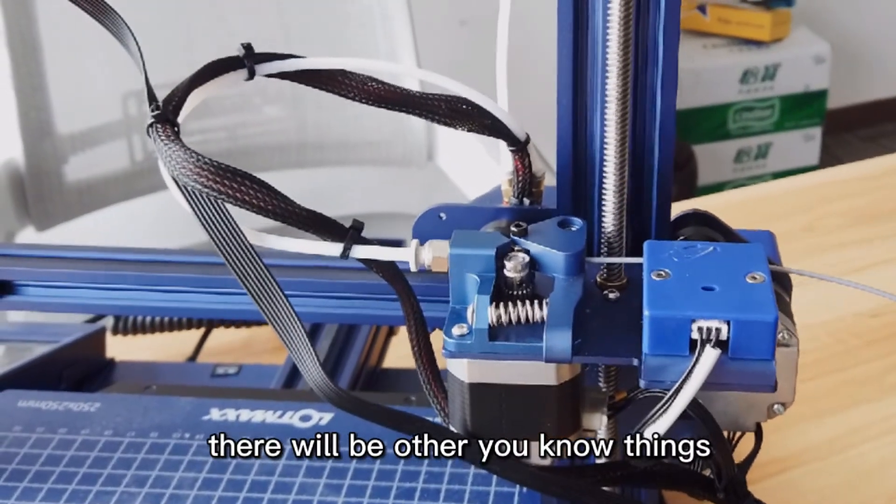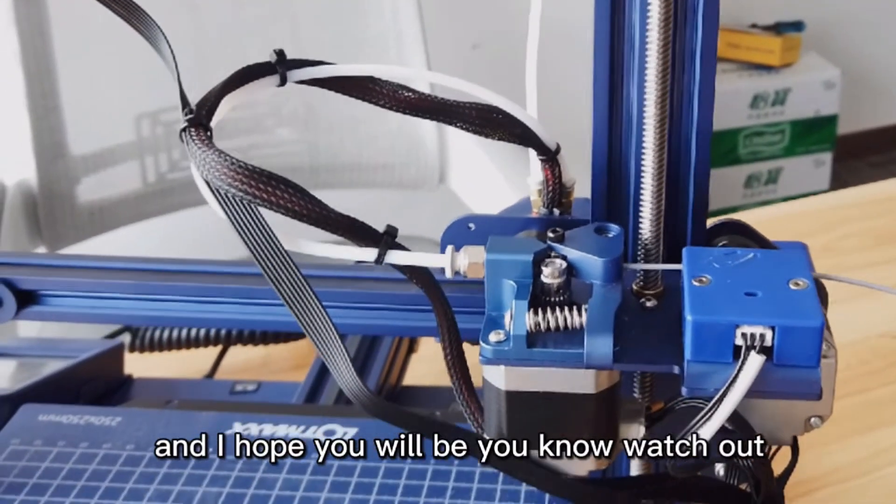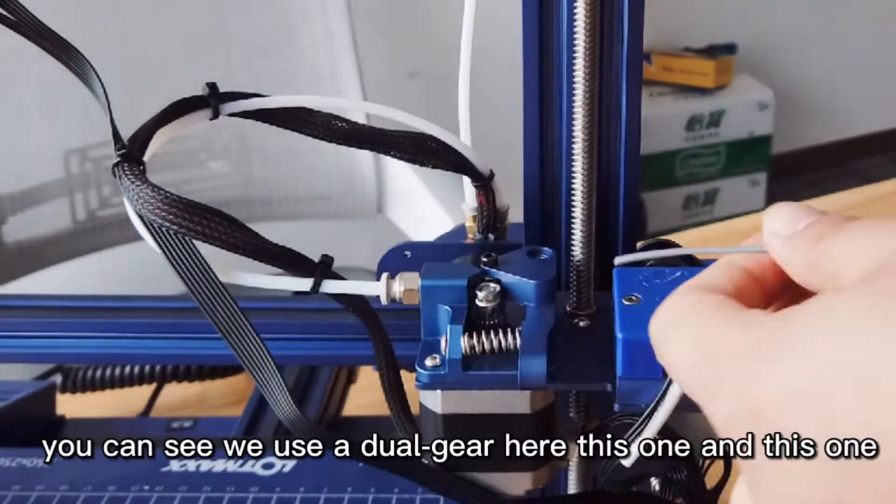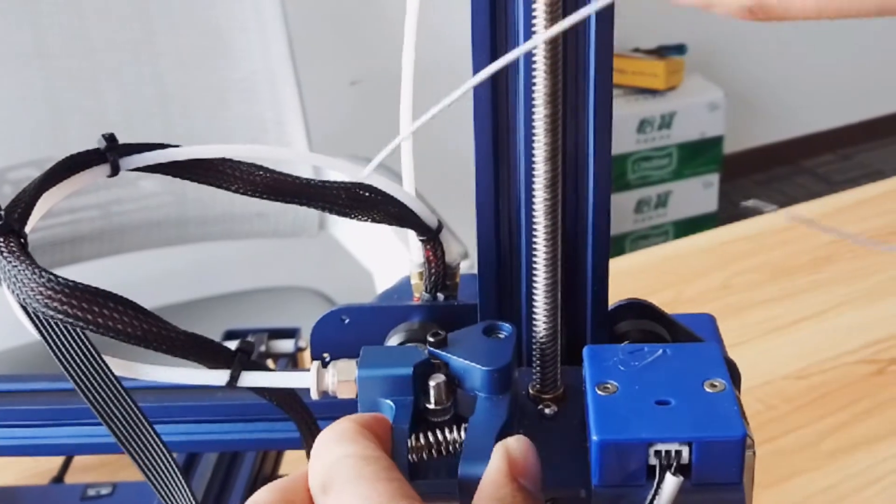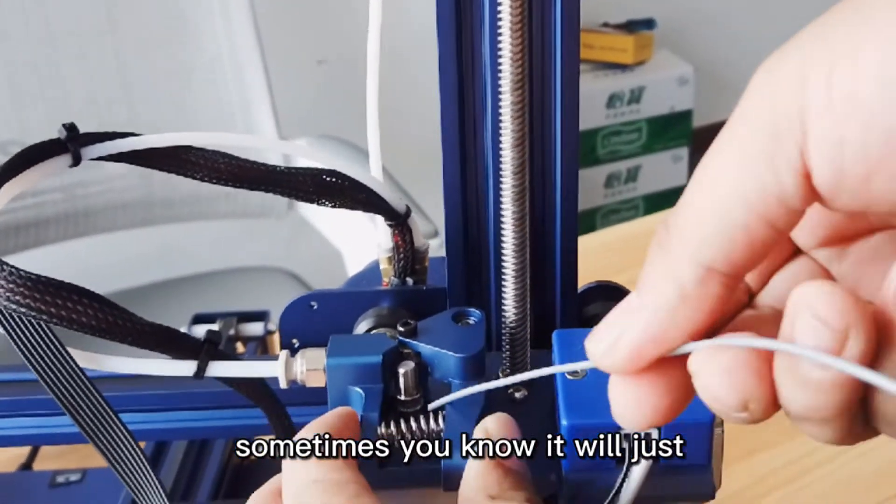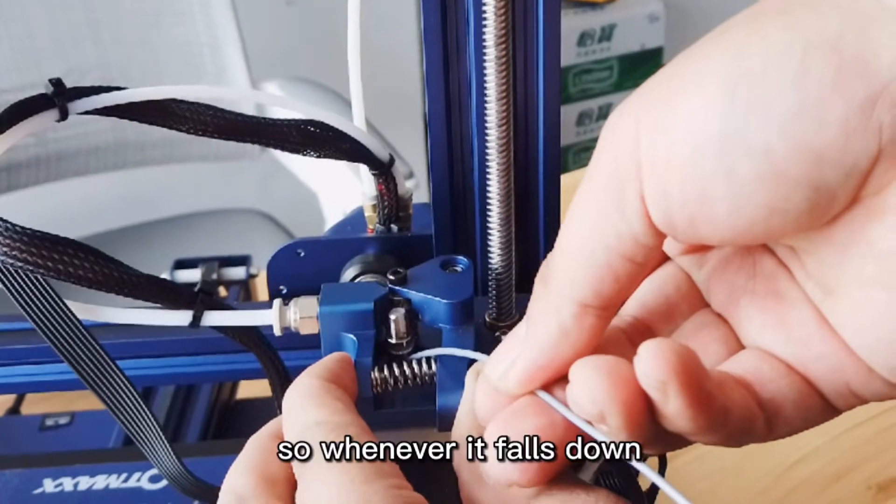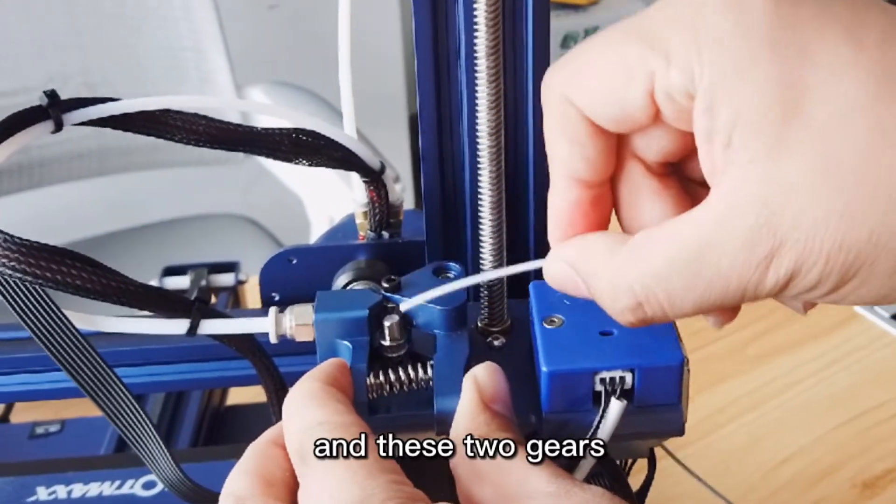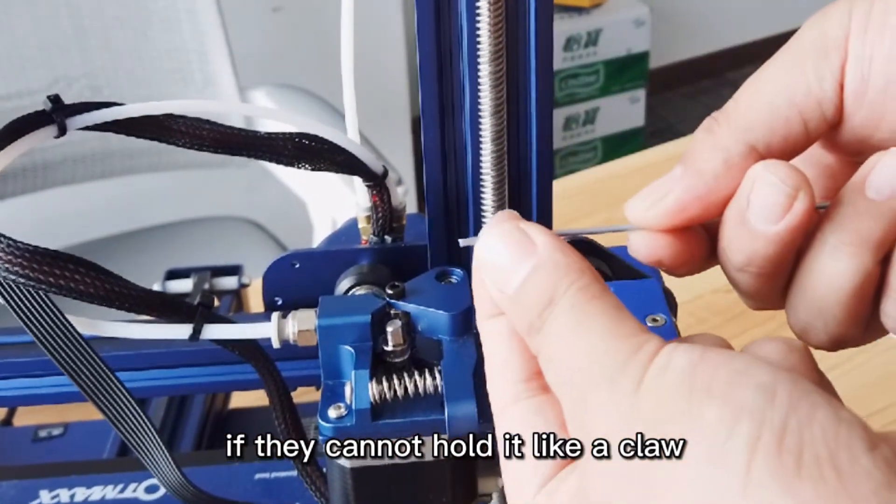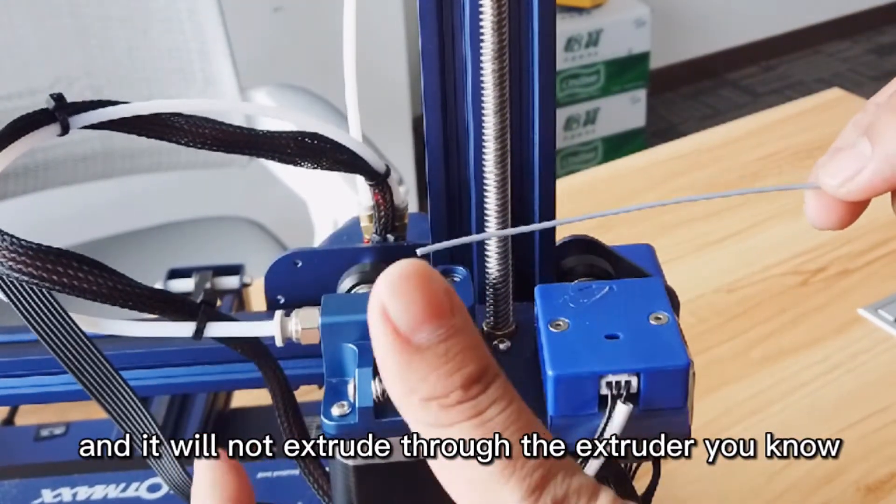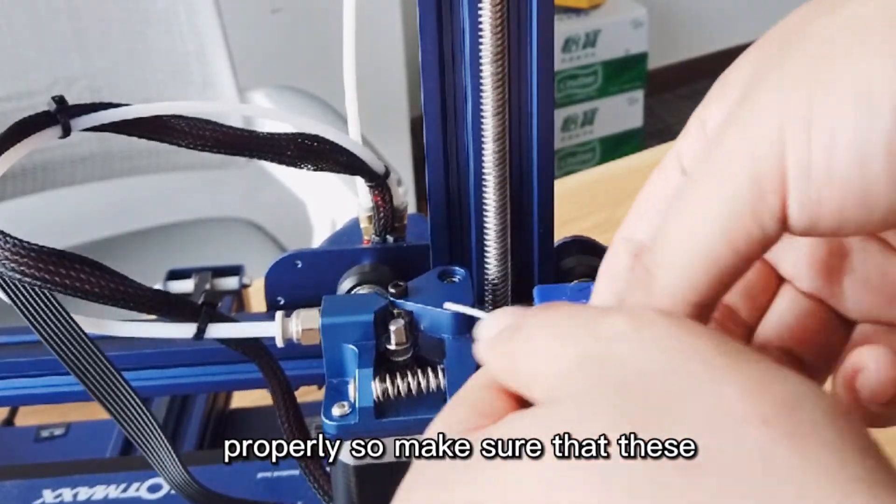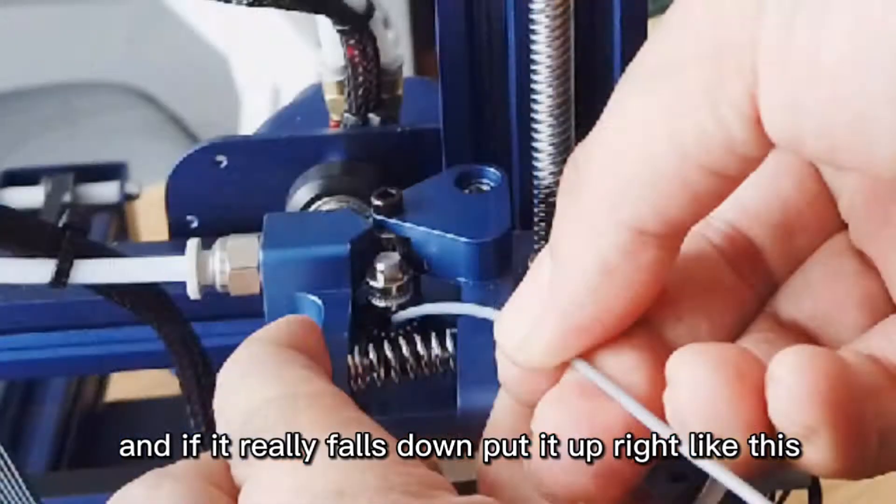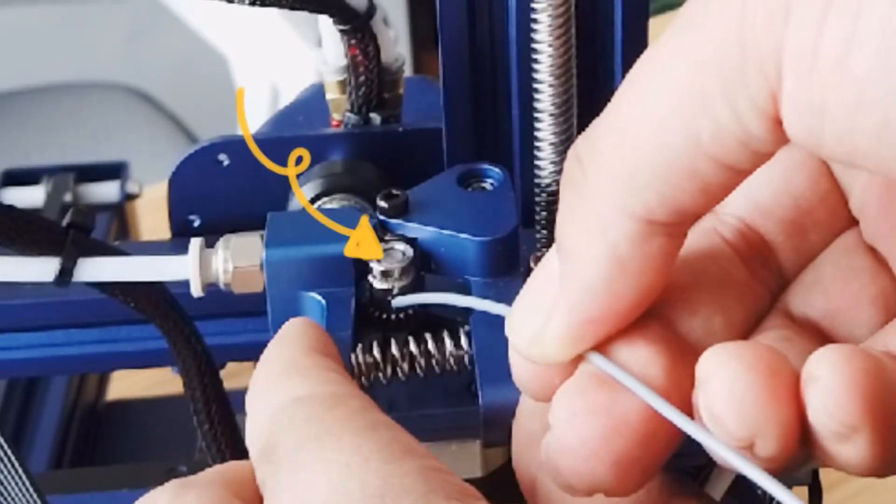And there will be other things, and I hope you will watch out for this one. This gear. You can see we use a dual gear, this one and this one. Sometimes it will just fold down, right? So whenever it folds down and the filaments go through this way, and these two gears, if they cannot hold it in like a clamp, it will not extrude properly. So make sure that this gear will not fold down. And if it really folds down, put it up like this. Great.